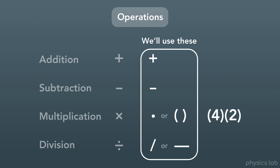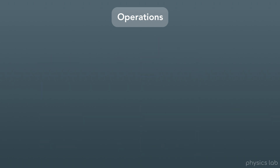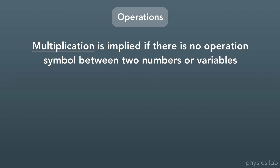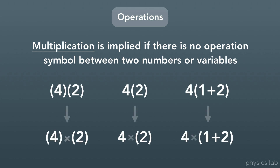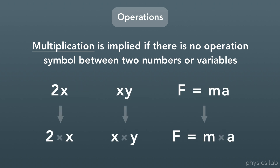When numbers are next to each other in parentheses, that means we multiply them — so here we'd multiply 4 times 2. For division, we use fraction symbols: either a slant or a number on top with a number on bottom, so 4 divided by 2. Multiplication is implied if there's no operation symbol between two numbers or variables. With variables, we don't use parentheses — so 2 times x, x times y, and f equals m times a are all written without a multiplication symbol.